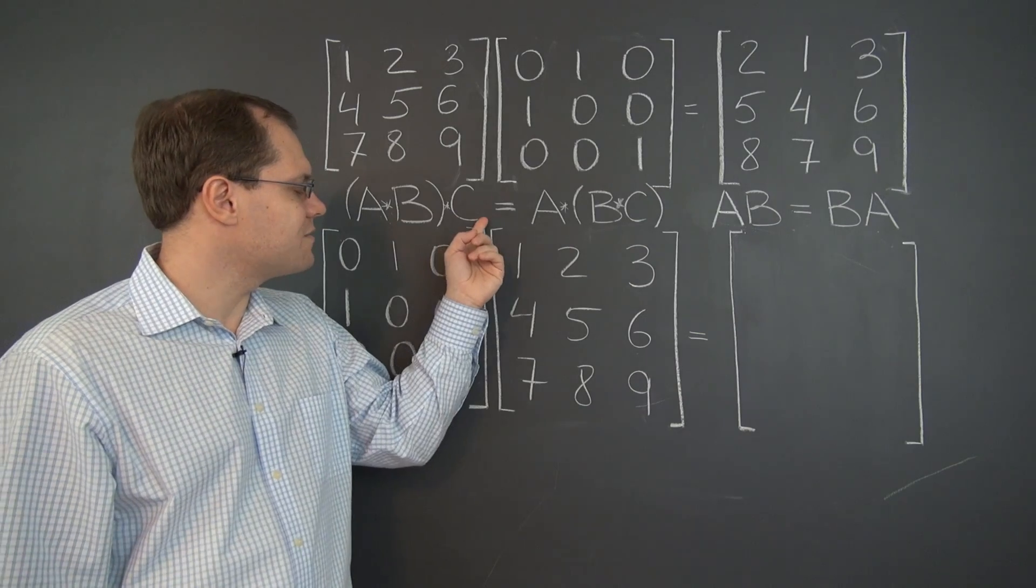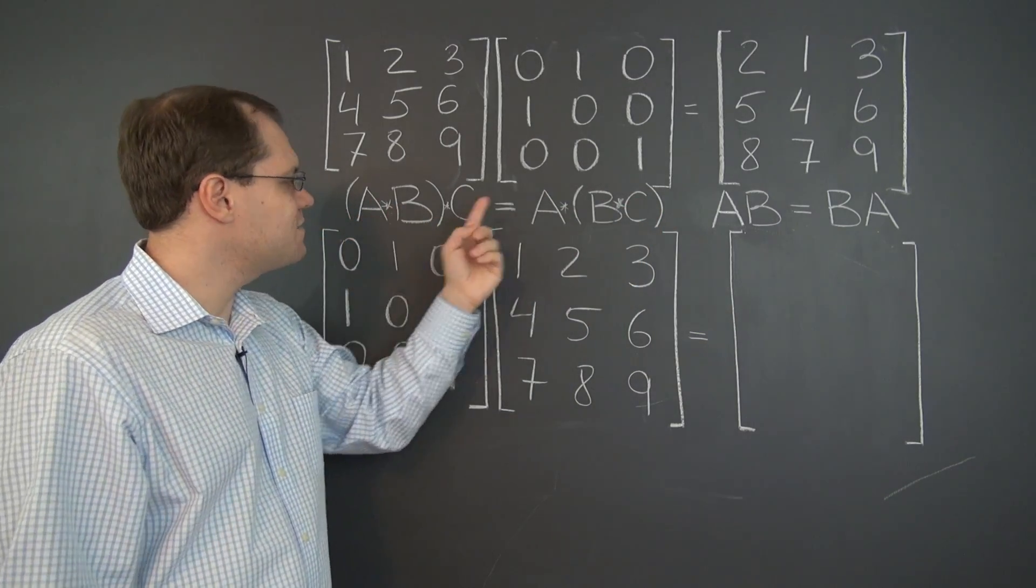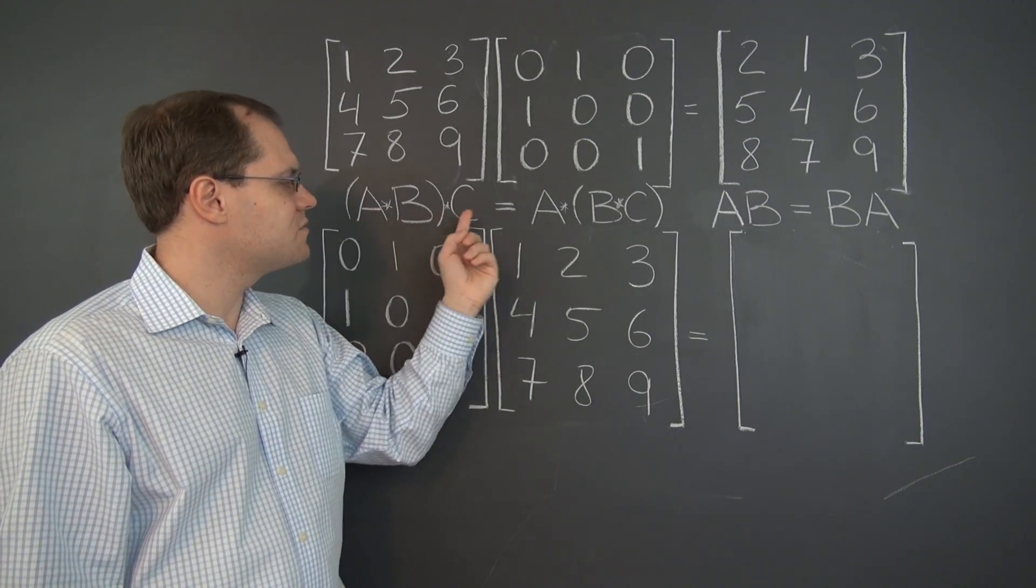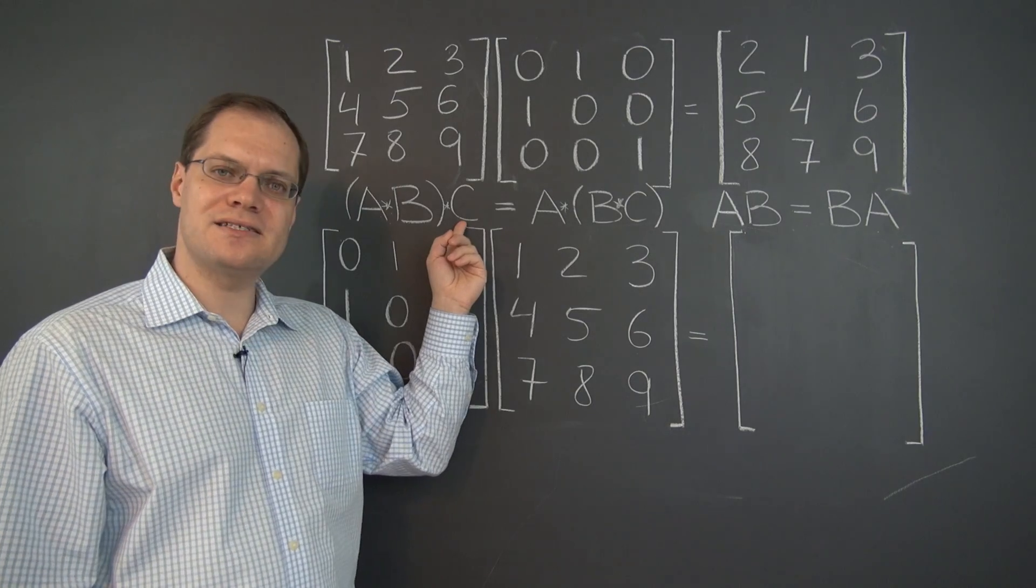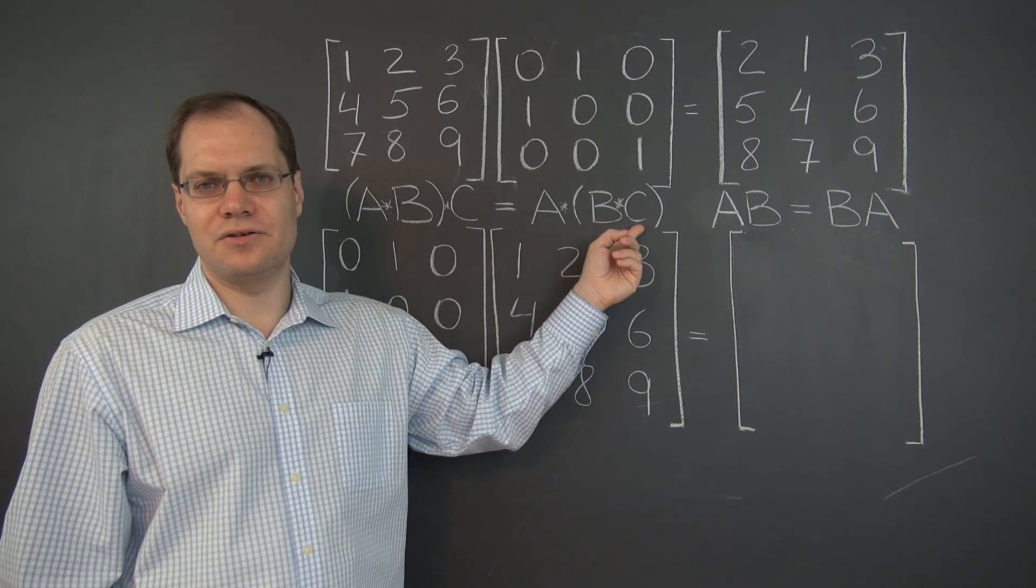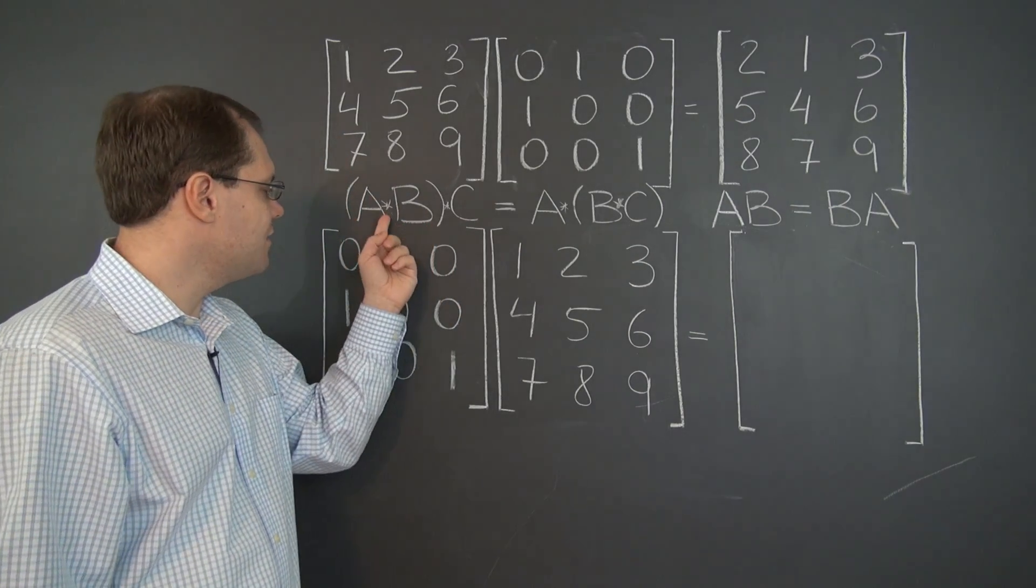You'll notice that on the left, where we have the associative property, both on the left and right the multiplicative terms come in the same order: ABC on the left-hand side, ABC on the right-hand side. What's different is the order of operations. On the left, the first multiplication is done first, and then the result is multiplied by C.